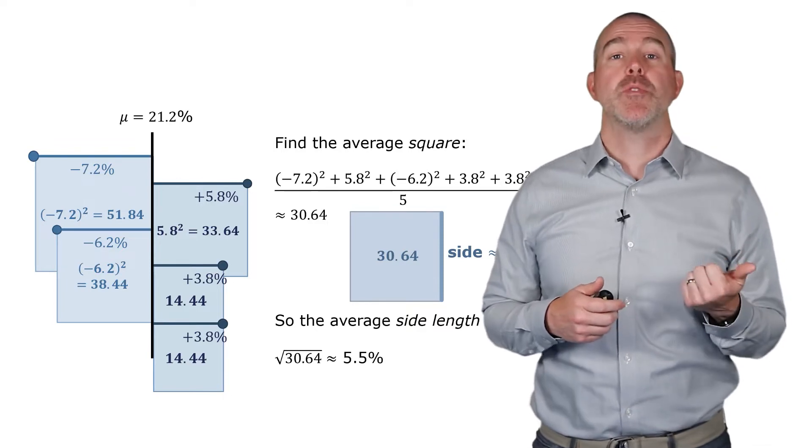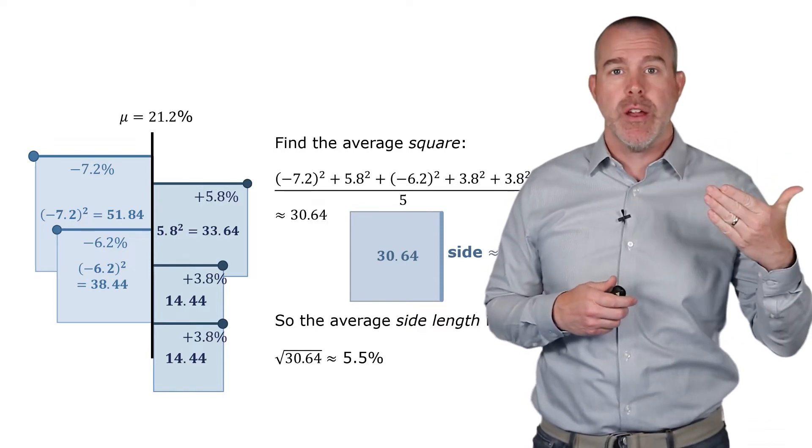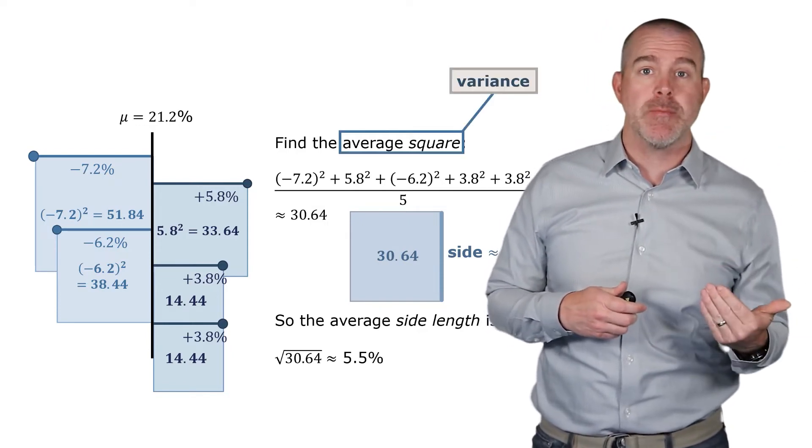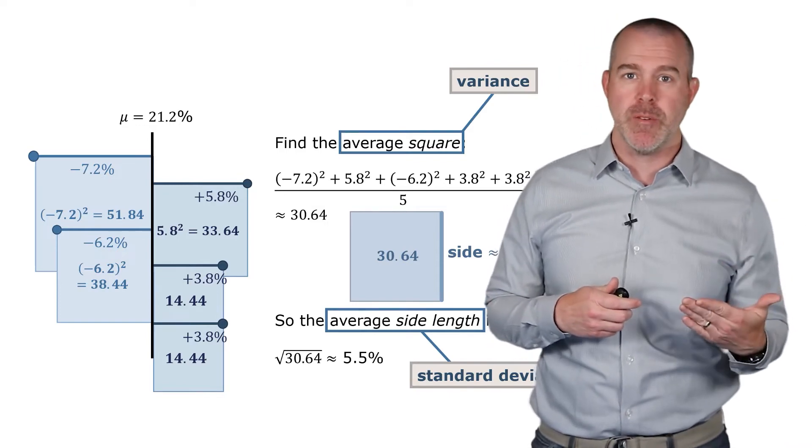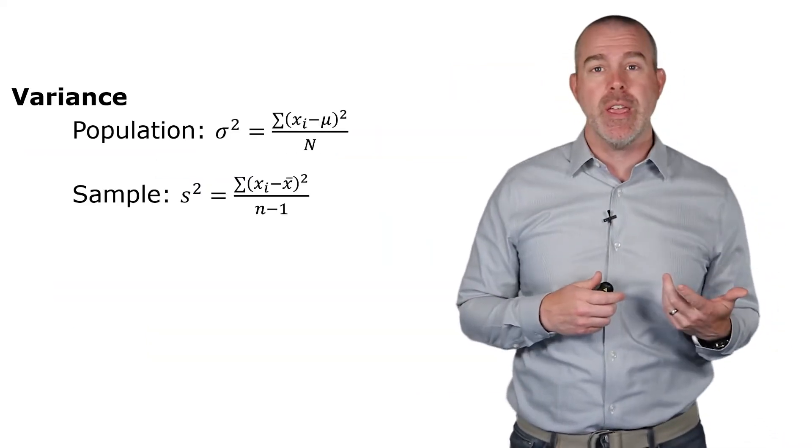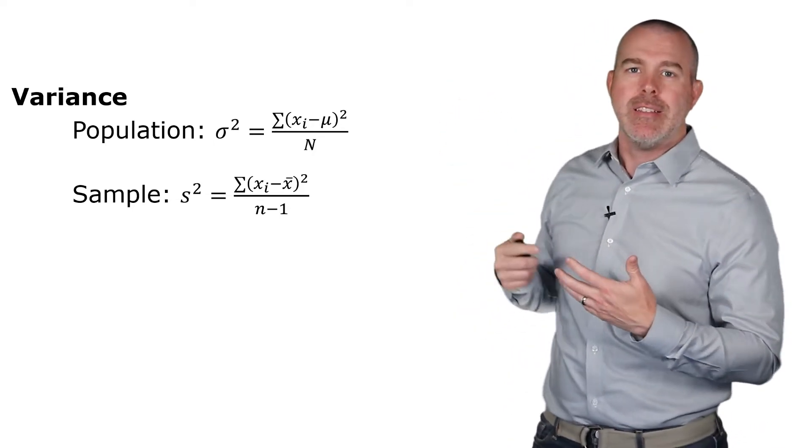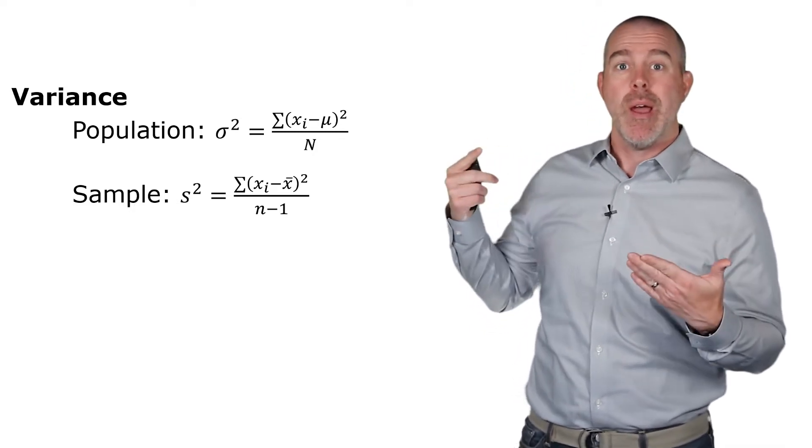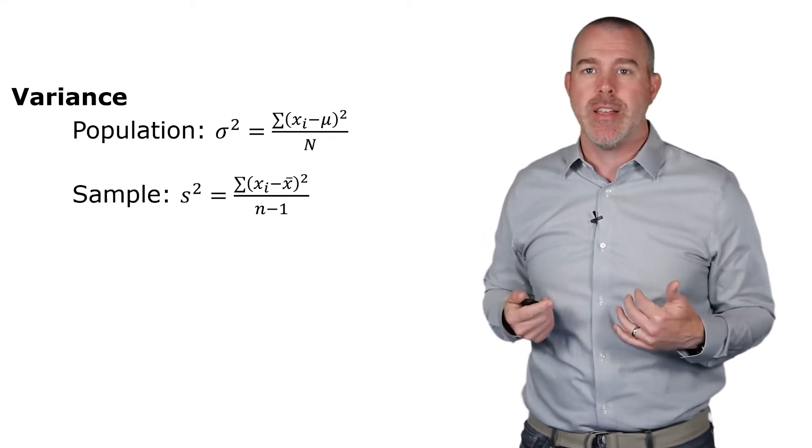Okay, so some terminology. The average square where you add up all the squares and divide by the total, that's called the variance. And the average side length is called the standard deviation. Here's some formulas for those. So the variance, it looks a little crazy here. But the x sub i minus mu, that's just the difference from the mean. So you take the value, subtract the mean, square it. The sigma there means you add them all up and then divide by the total.